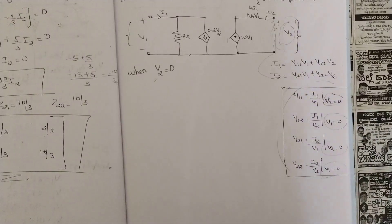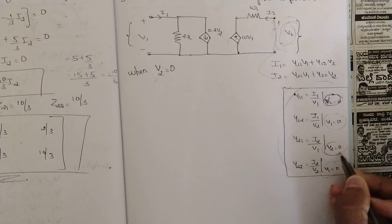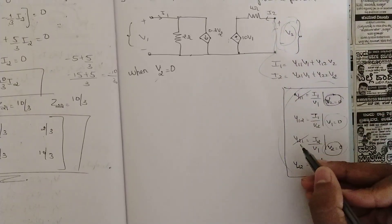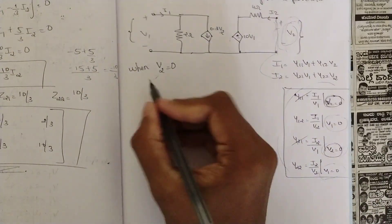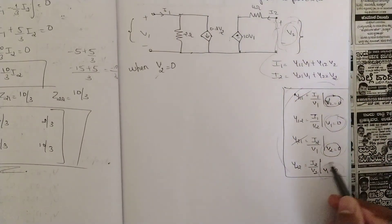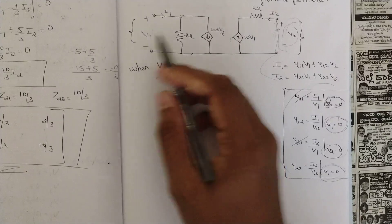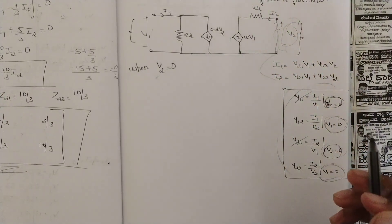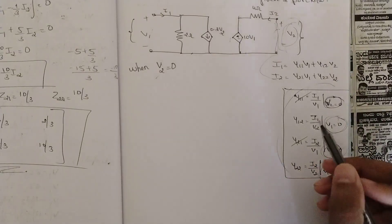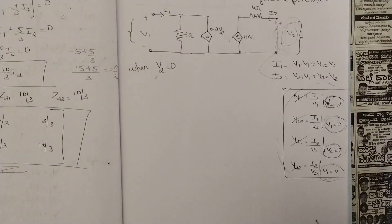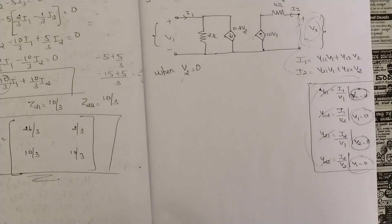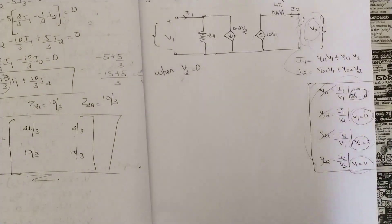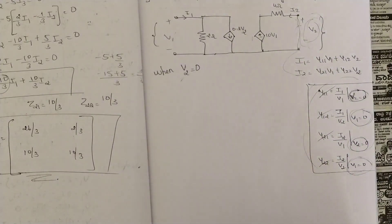When V2 = 0, we obtain the values of Y11 and Y21. The second part is when V1 = 0 — short-circuit the V1 source — from which we get Y12 and Y22. This segmented approach is more efficient. In Z parameters I used only mesh analysis to introduce the concept; here I will use this condition-based method.